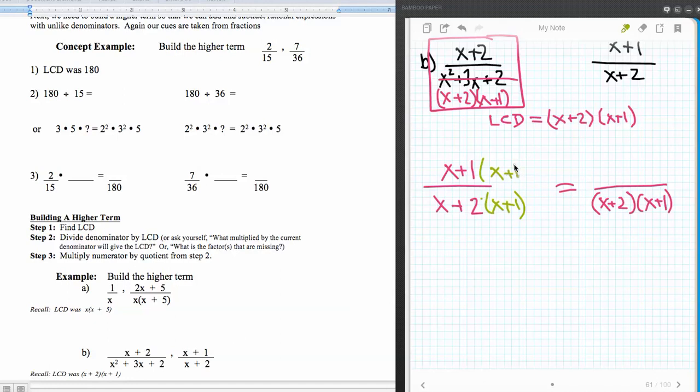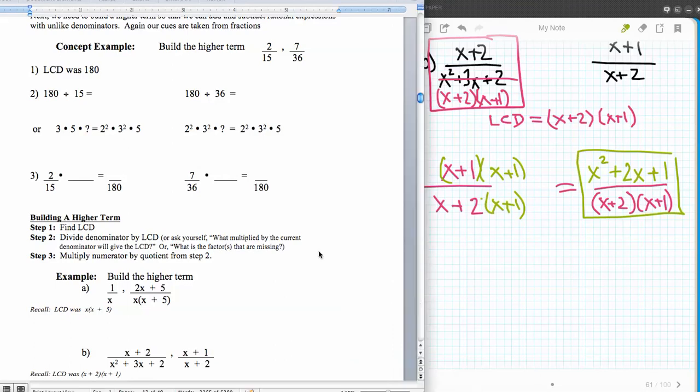Now here's where it's really important to use that algebra skill where we multiply out these two numerators. Because the next thing we're going to be doing, remember, is adding these. And to add two numerators, we have to have individual terms. So we're going to actually multiply this out. This is x plus one quantity squared. So I'm going to square the first term, x squared, plus the product of the two terms times two, two x, and plus the last term, one squared. And there we go. There's my new higher term. Now we're ready to proceed on.